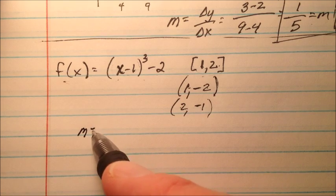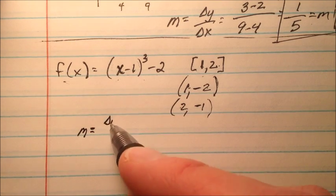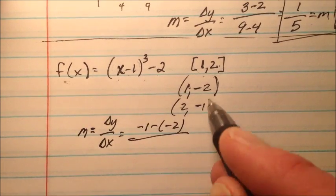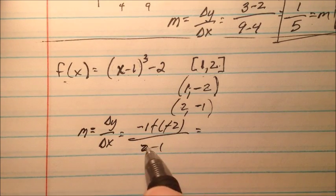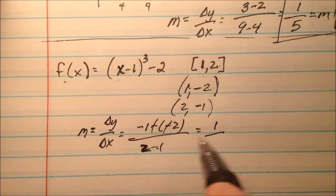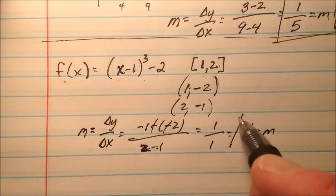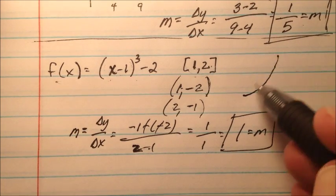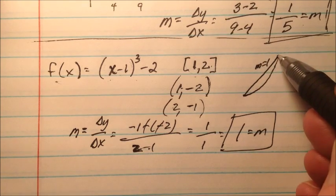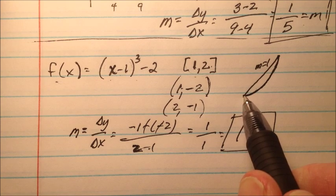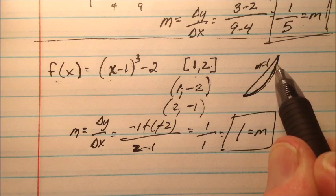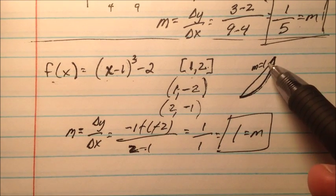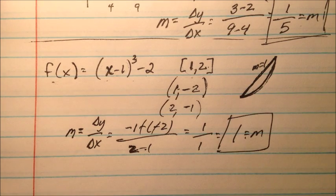We want to know what the average rate of change is — what's the slope between those two points? Change in y over change in x: negative 1 minus negative 2 over 2 minus 1. Negative 1 plus 2 is 1, and 2 minus 1 is 1. So our average rate of change between there is 1. The function had curvature to it, but from point to point the secant line's slope equals 1. Down lower it's growing slowly, and as it goes it grows more quickly.